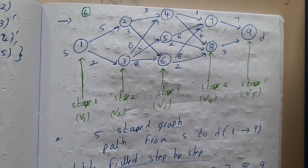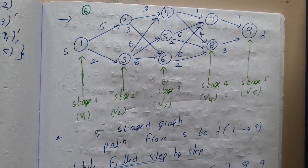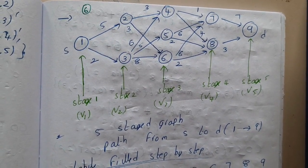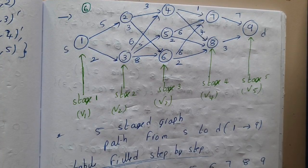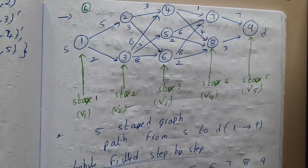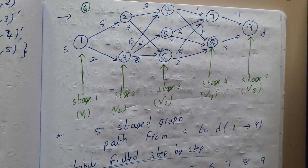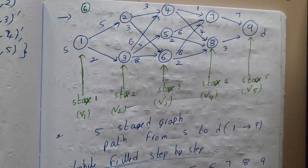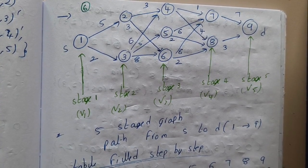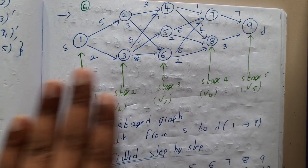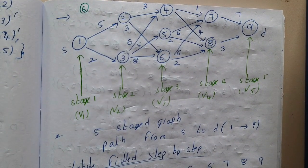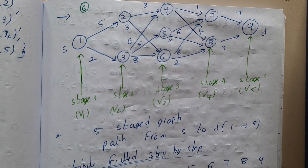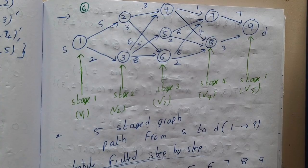Hello guys, we are back with our next lecture. In this lecture, let us go through the backward approach in multi-staged graphs. In the previous lecture we went through the forward approach. Please make sure you are perfect with that method, because if you are perfect with one method you can do the same in the opposite way for the other method.